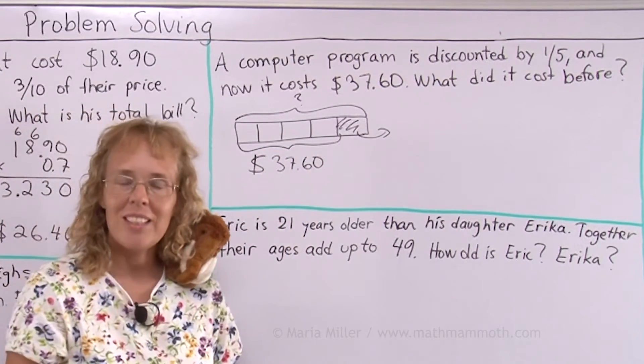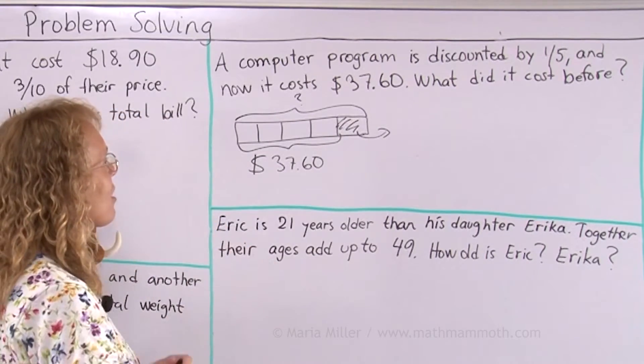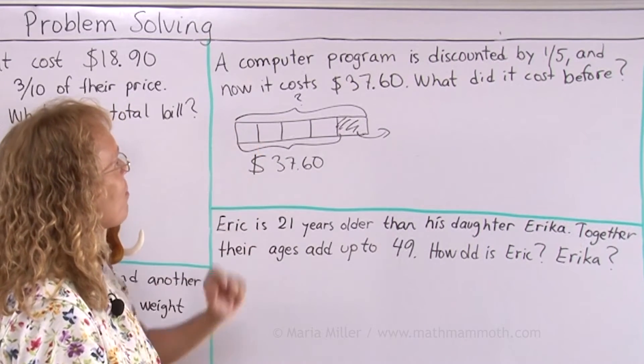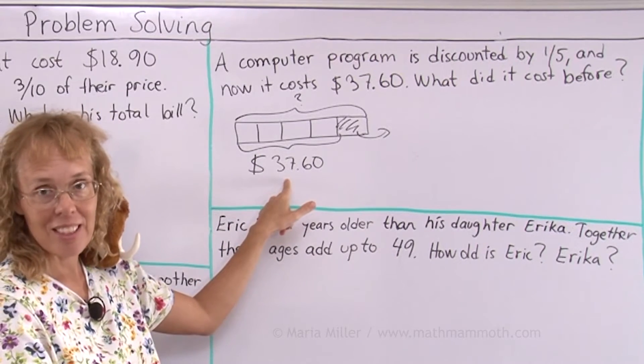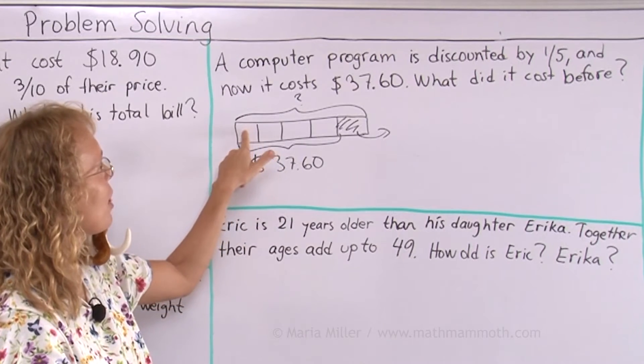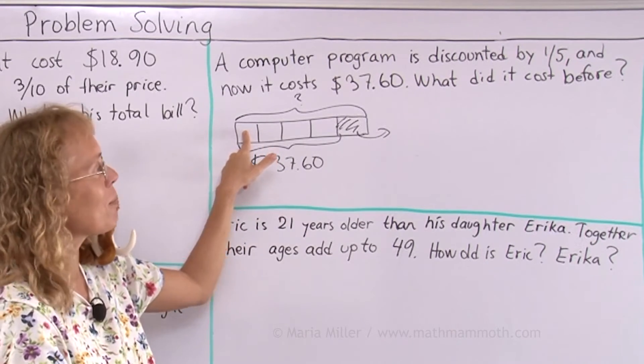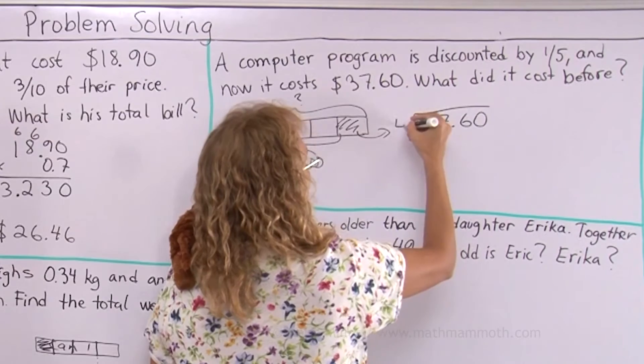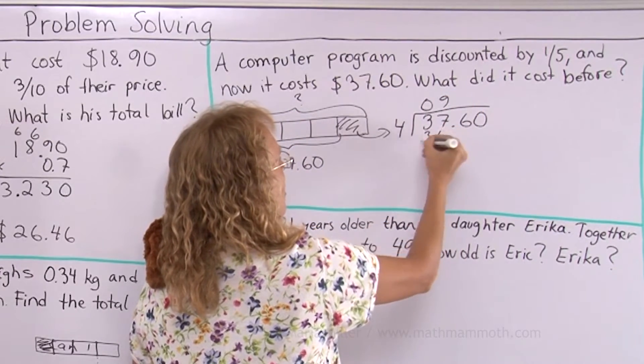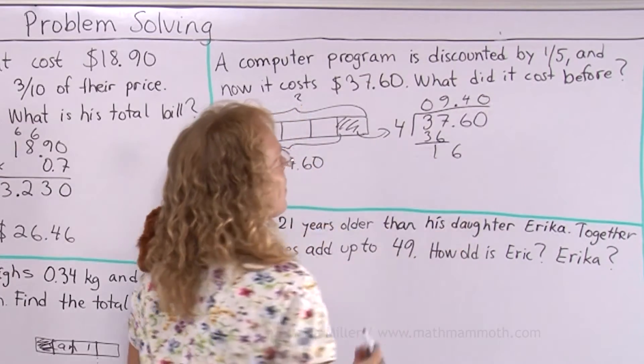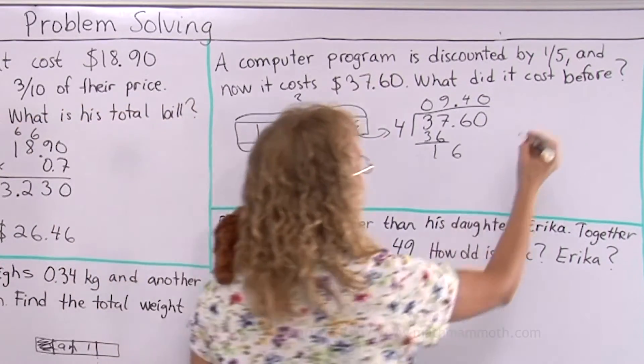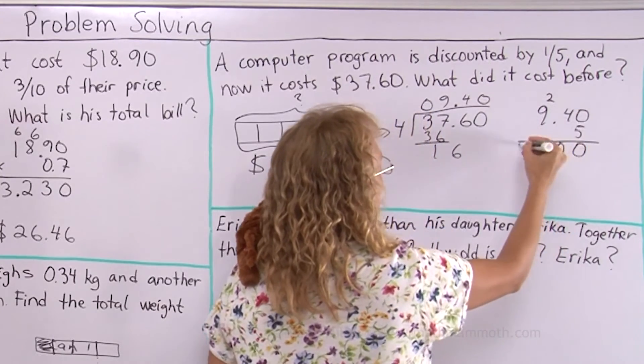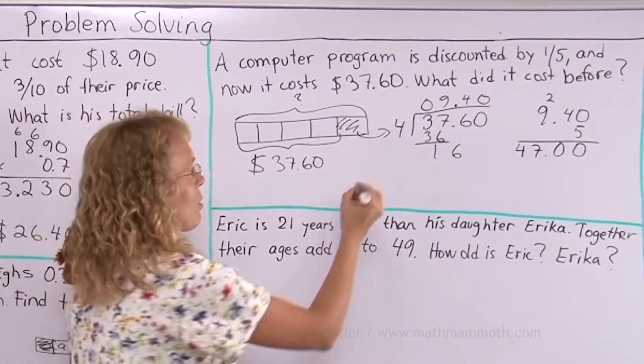So how do I find the original price? As usual these kind of problems when you have the bar diagram you start out by finding how much is the one block here. One block this one here is exactly one-fourth of this price, right? So I take this divided by 4 to find how much this is and then I multiply that times 5. $37.60 divided by 4. We have 9 times 4 is 36 and then 16 so 4 and 0 and then 20 and 47. So the original price was $47.